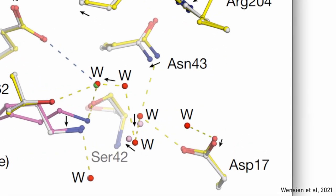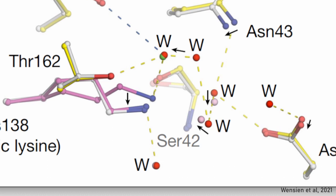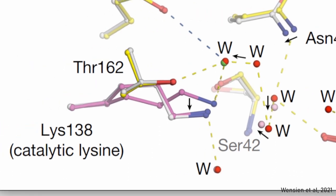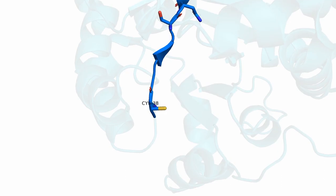For example, the key catalytic residues asparagine-43 and aspartic acid-17 are getting slightly repositioned, as well as four catalytic water molecules. The catalytic lysine-138 forms a Schiff base intermediate with the substrate. It is disordered in the oxidized state, but becomes ordered with reduction.